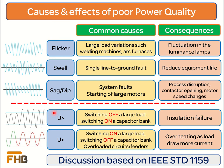Overvoltage is commonly caused by switching off a large load or switching on a capacitor bank. Overvoltage can cause severe damage in the power system such as failure of electronic devices. Sustained overvoltage drastically reduces the life of electrical equipment such as transformers, cables, capacitor banks, and electrical motors. Events causing undervoltage are simply the reverse of the events which cause overvoltage. Overloaded circuits or feeders can also suffer from undervoltage. Long duration undervoltage increases heating loss in electrical equipment, and motor controllers also drop out during undervoltage conditions.